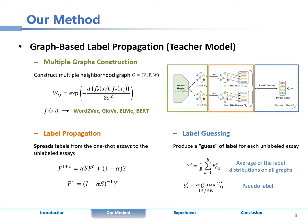Among them, multiple graph construction models the relationship among essays from multiple aspects. The neighborhood graphs can be constructed based on various word embeddings such as Word2Vec, GloVe, ELMo, and BERT.